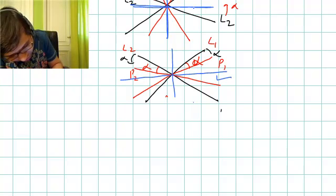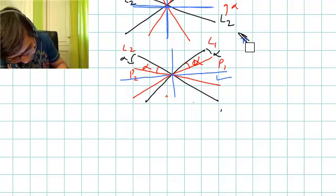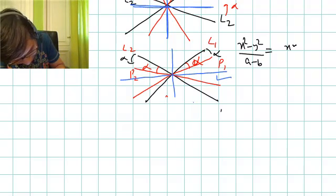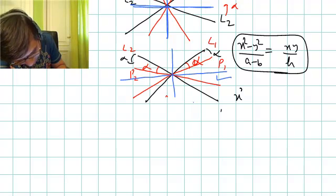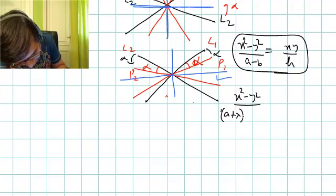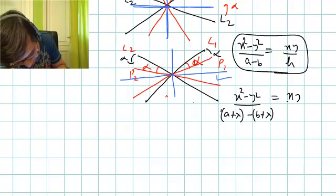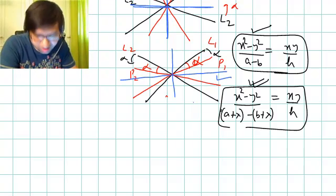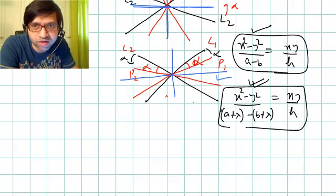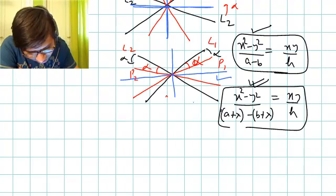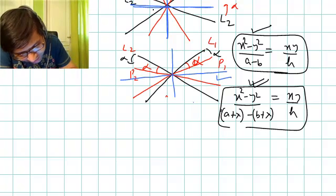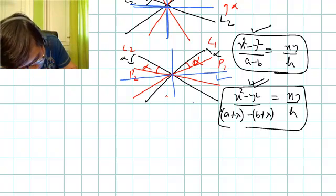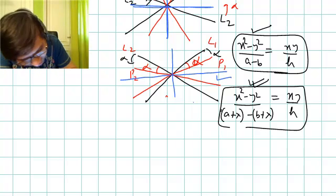The angle bisector formula for the first pair gives: (x² - y²)/(a - b) = xy/h. For the second pair, a is replaced by (a + λ) and b is replaced by (b + λ), but the right-hand side is the same. In the denominator, (a + λ) - (b + λ) = a - b, so lambda cancels out. Both pairs have the same equation of bisectors. Since the bisectors are the same, this angle equals this angle and this angle equals this angle — which shows that the angle between l1 and p1 is the same as the angle between l2 and p2.